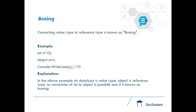Coming to boxing: if you are doing conversion from value type to reference type, it is known as boxing. Value type is a smaller type compared to reference type, so always implicit conversion takes place. For example, int i = 10 is a value type, and object o = i converts that value into reference type — this is called boxing.